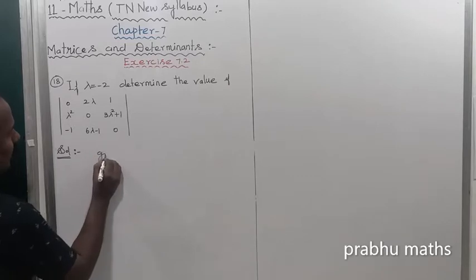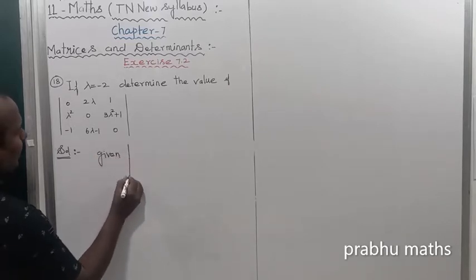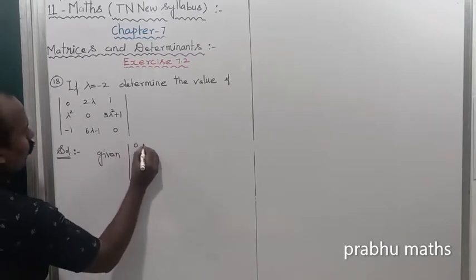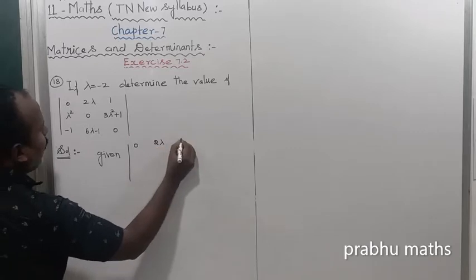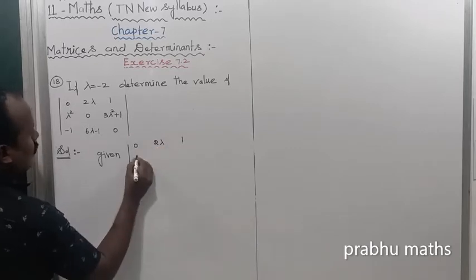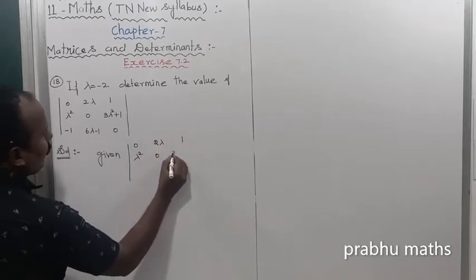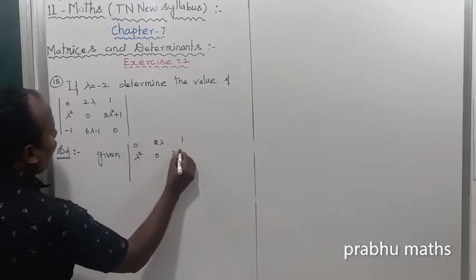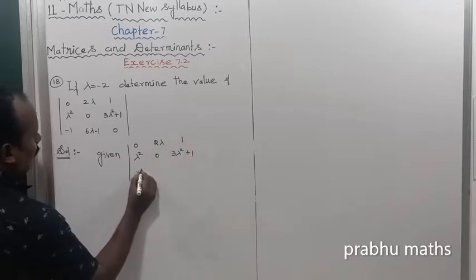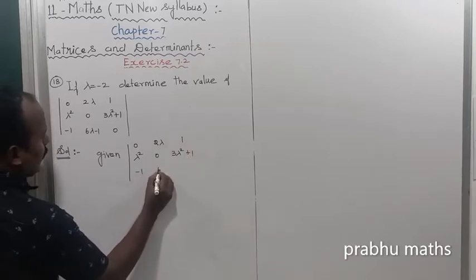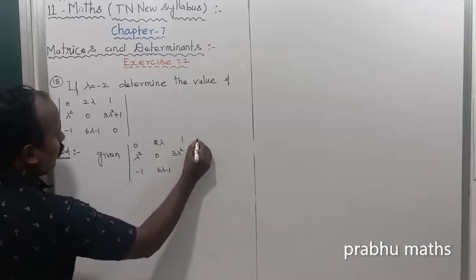So first of all, the given determinant value is 0. The matrix entries are: 2 lambda, 1; next one lambda squared, 0; 3 lambda squared plus 1; next one minus 1, 6 lambda minus 1, 0.